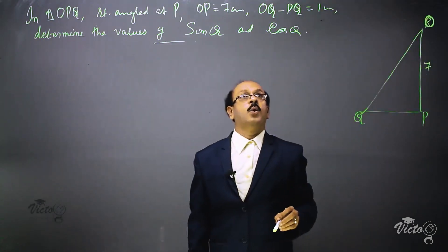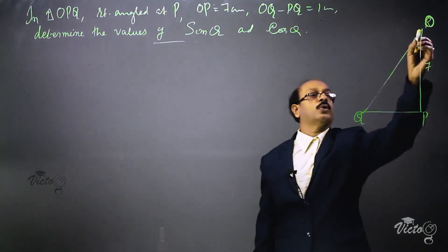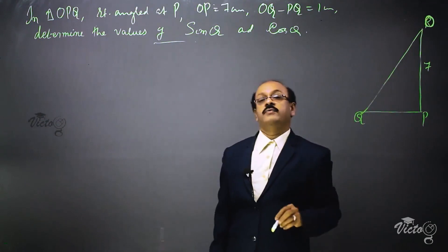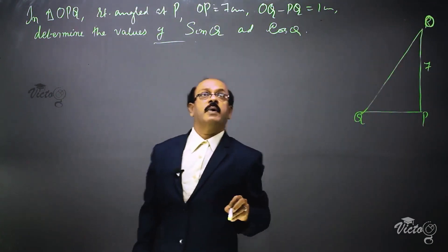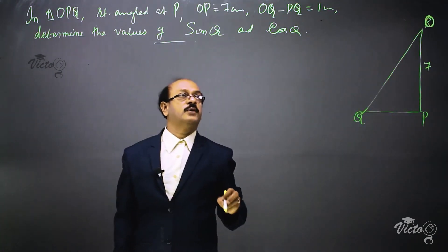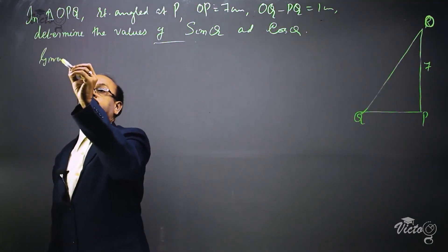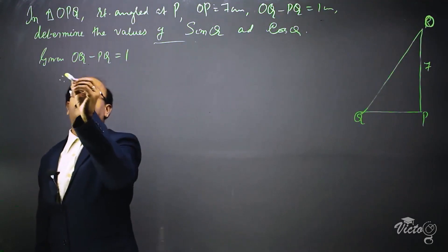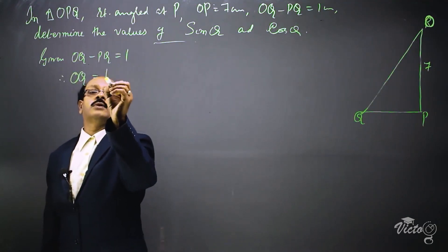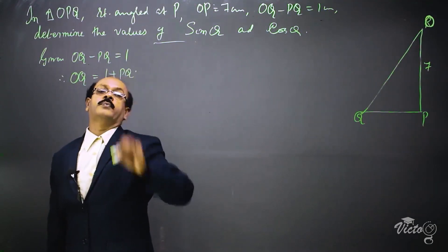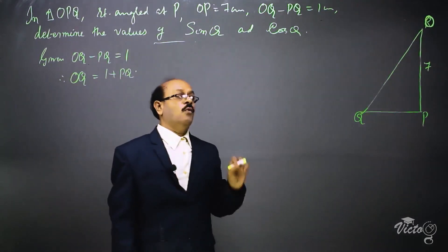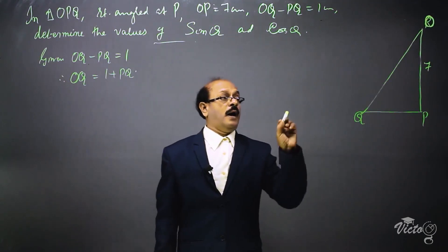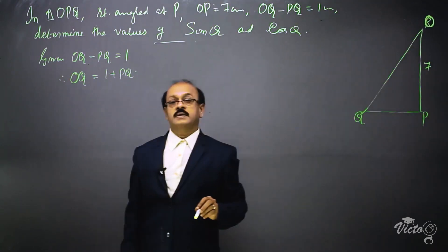It is given that OQ minus PQ equals 1, where OQ is the hypotenuse. Therefore, OQ is equal to 1 plus PQ. Now we apply the Pythagorean theorem: hypotenuse squared equals base squared plus altitude squared.